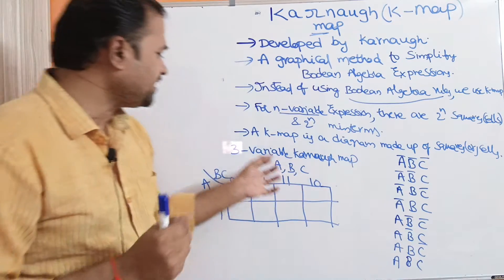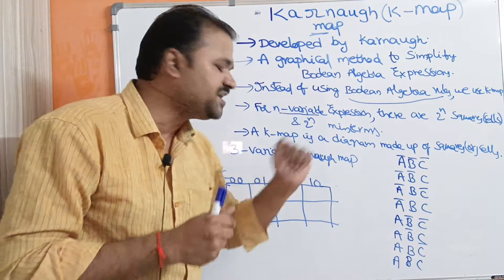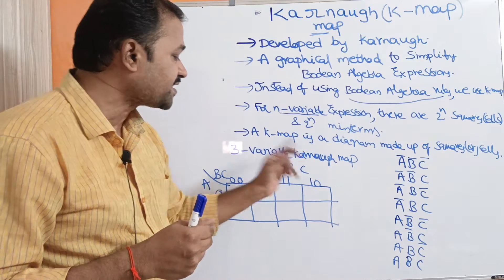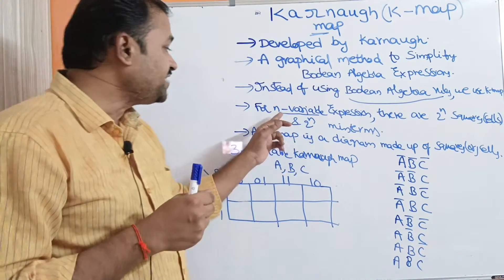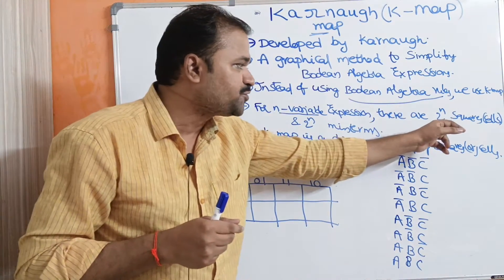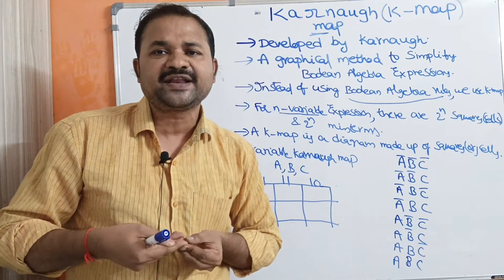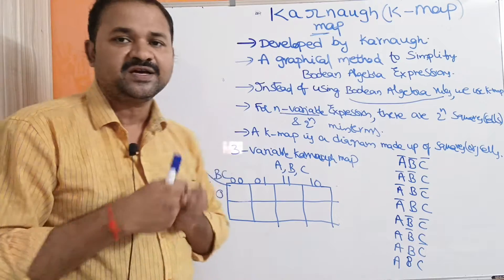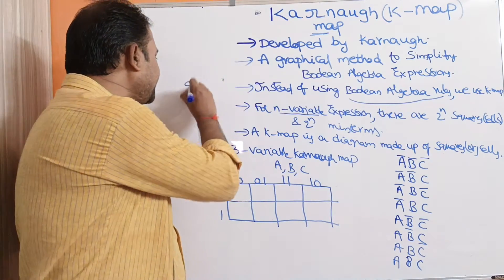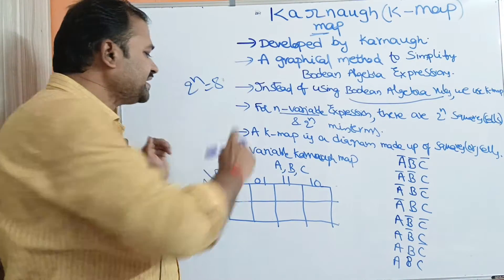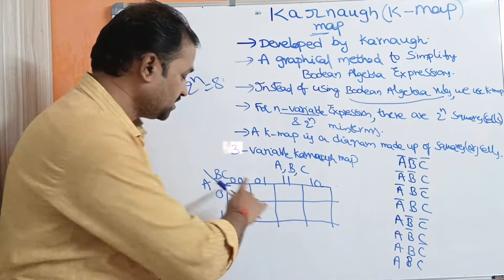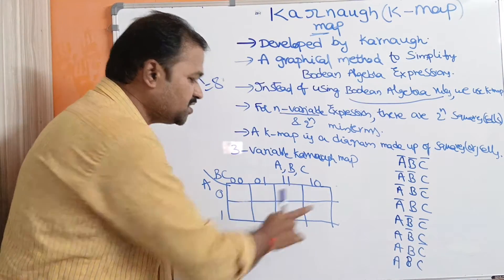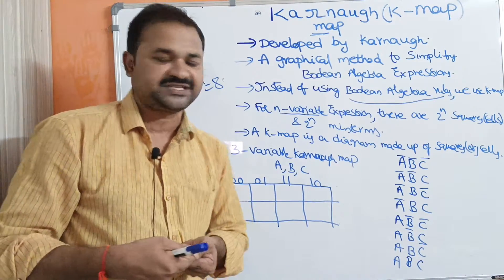Let us see how we can use a 3-variable Karnaugh map. Let us assume that the variables are A, B, and C. If there are 3 variables, then totally we will have 2^3 = 8 squares or cells. In the first row we have 4 squares, and in the second row we have 4 squares or cells.